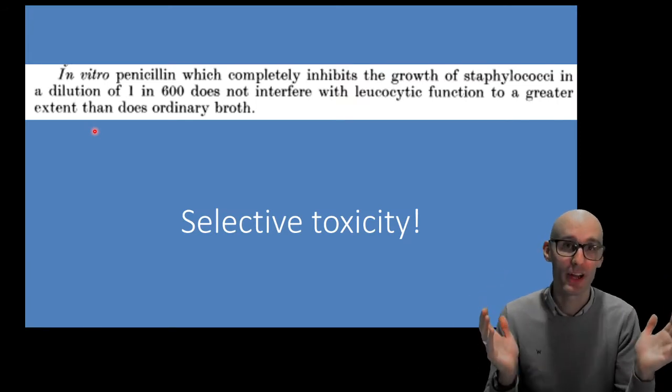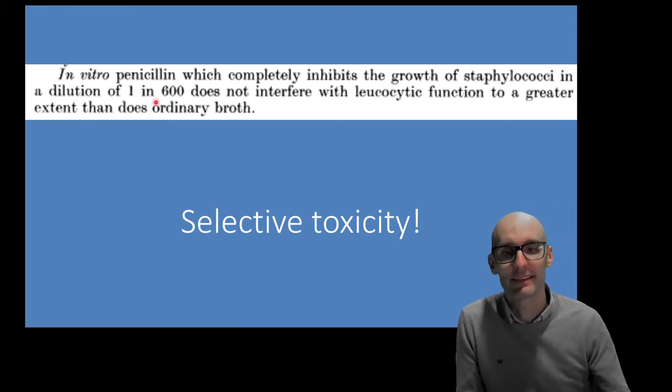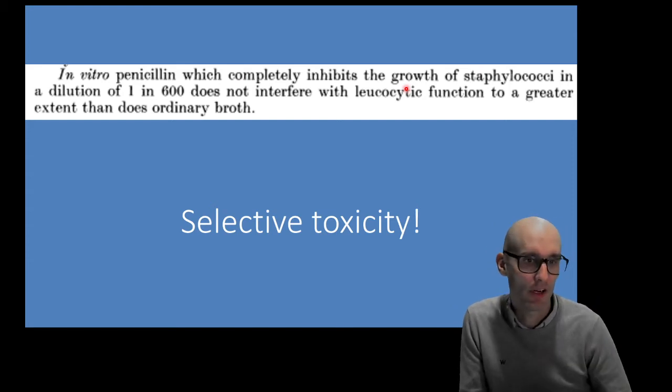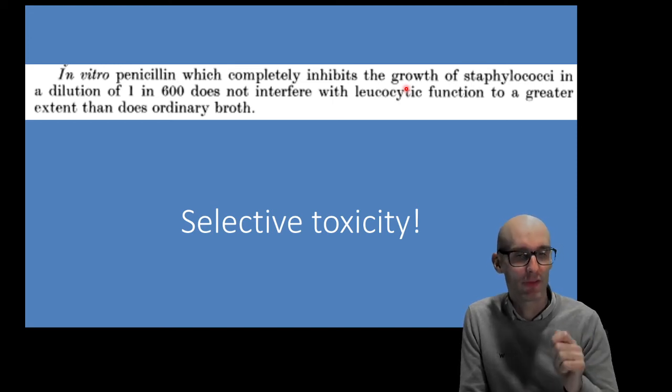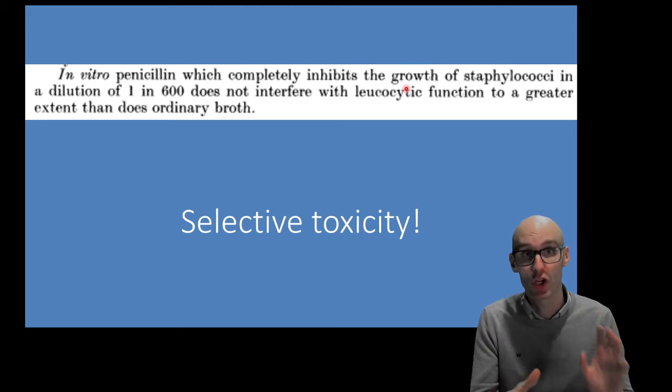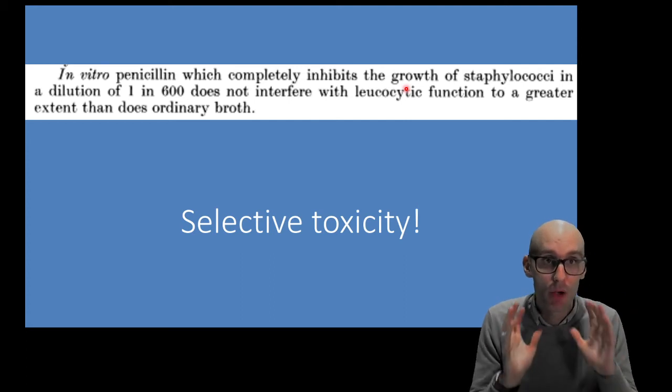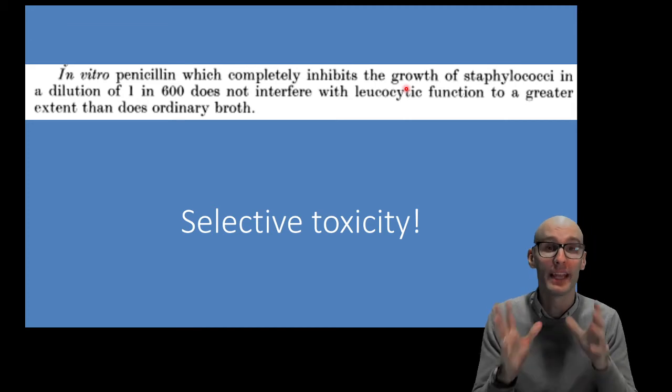And proof of this is in the 1928 paper. In the 1928 paper, he says, in vitro penicillin, so penicillin, which completely inhibits the growth of staphylococcus in dilutions of 1 to 600, does not interfere with leukocytic function. So a leukocyte is a white blood cell, a white blood cell from a human. So he took human white blood cells, and he put penicillin on it, and he showed it didn't interfere with their growth. The white blood cells were not killed. What he was describing was selective toxicity, and he realized the treatment potential of the penicillin and followed it up.